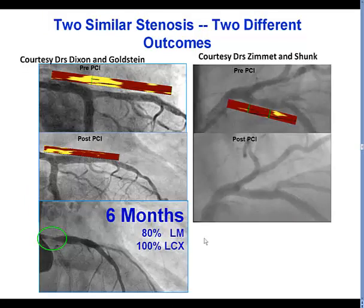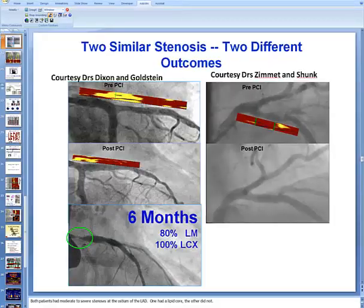Moreover, the presence of lipid might affect the likelihood of restenosis after stent placement. This is an example of a patient who had a proximal LAD lesion with a large lipid core plaque extending into the left main.